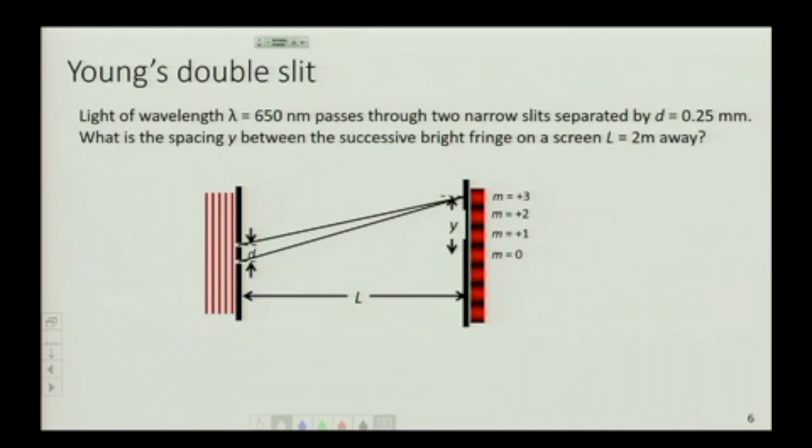So how do I do this? I go back to what we had: d sine theta is equal to m lambda. The second thing we said was that the tangent of the angle, this is d sine theta m, the tangent of the angle is y over l, which gives us the equivalent of that.